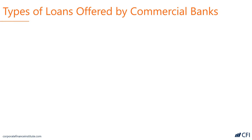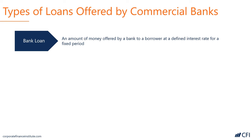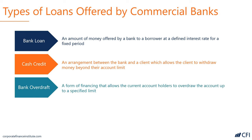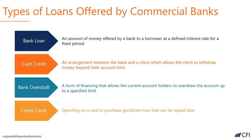Let's look at the types of loans offered by commercial banks. There's a standard bank loan where the amount of money offered by a bank to the borrower has a defined interest rate and a fixed period of time. There's cash credit where the bank lends a client money to go beyond their account limit. There's a bank overdraft where the client can extend for a certain period of time beyond the limit of their account. Finally, credit cards are a form of spending where customers can purchase goods or services and pay for them later with the actual cash in their accounts.